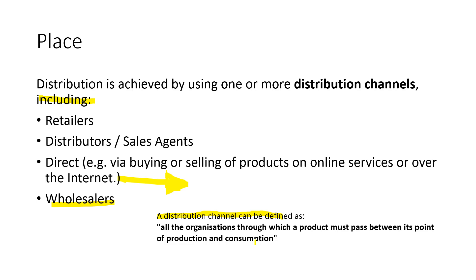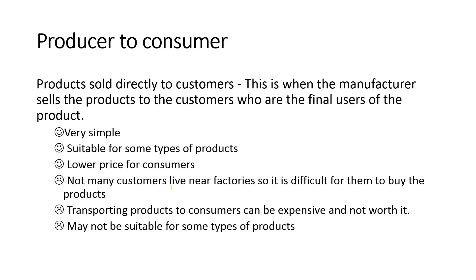Producer to consumer is where the product is sold directly to the customer. The manufacturer sells the product to the consumer who is the final user — there are no intermediaries involved. It is simple, suitable for some types of products, and means a lower price for consumers. The downside is that not many customers live near factories, making it difficult for them to buy the product.